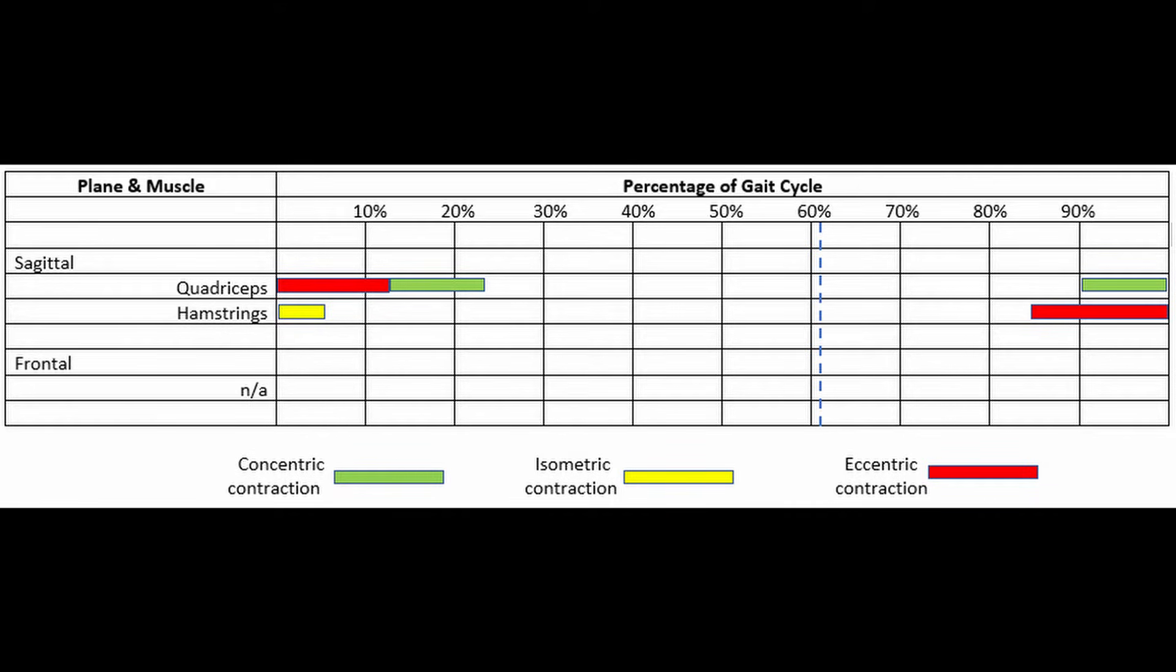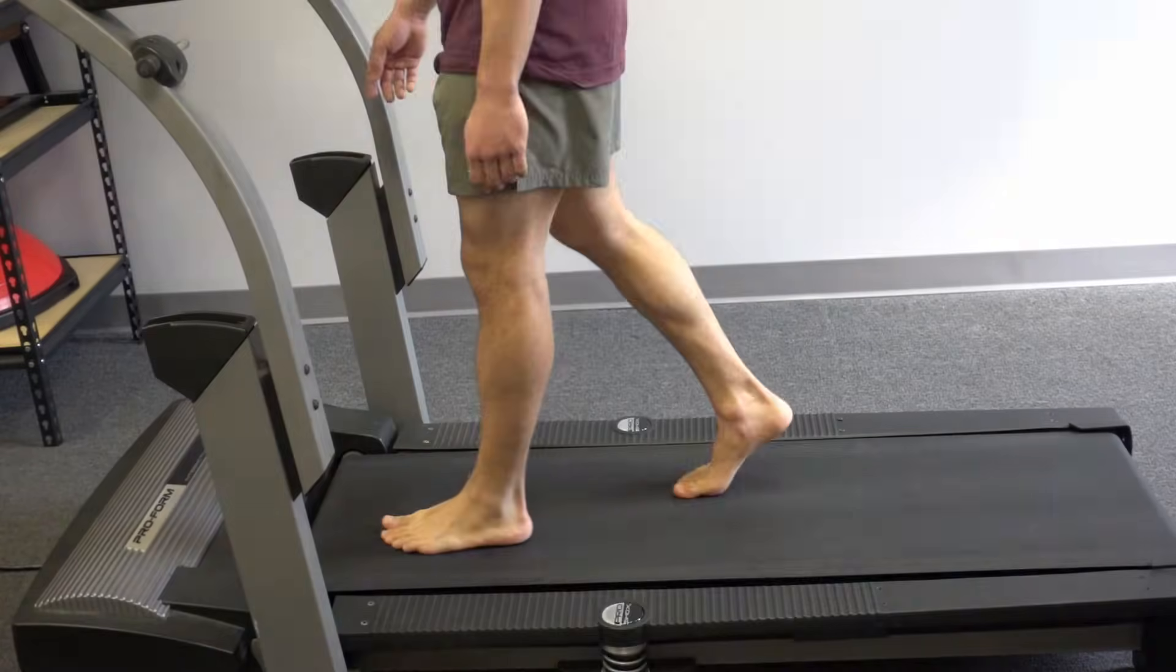As we move into mid stance, the quadriceps concentrically contract to bring the knee back towards full extension. The knee muscles then are relatively quiet until we get to terminal swing. At this point, the hamstrings contract eccentrically to slow down the momentum of the tibia during terminal swing. In addition, our quadriceps contract to prepare for contact with the ground. So let's see how that looks.